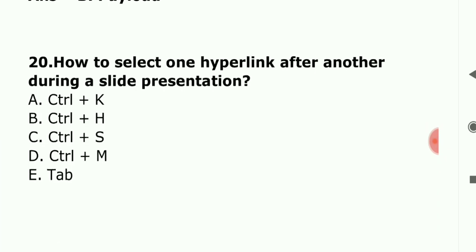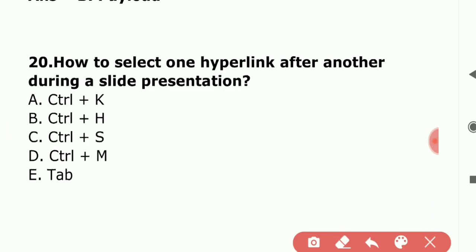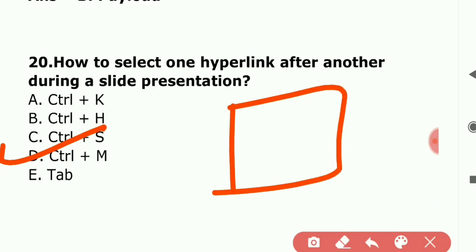The last question: 'How do you select one hyperlink after another during a slide presentation?' If you have a hyperlink during a slide presentation and need to select the next one, you use Ctrl + M. When moving from one presentation to another, we also use Ctrl + M.